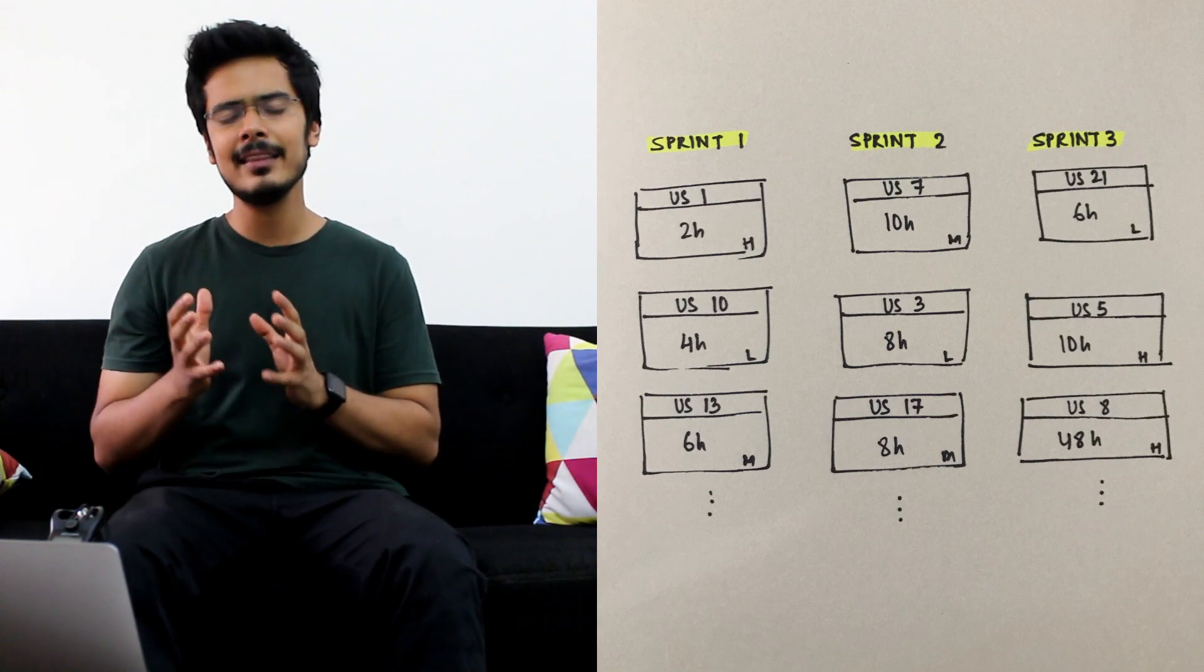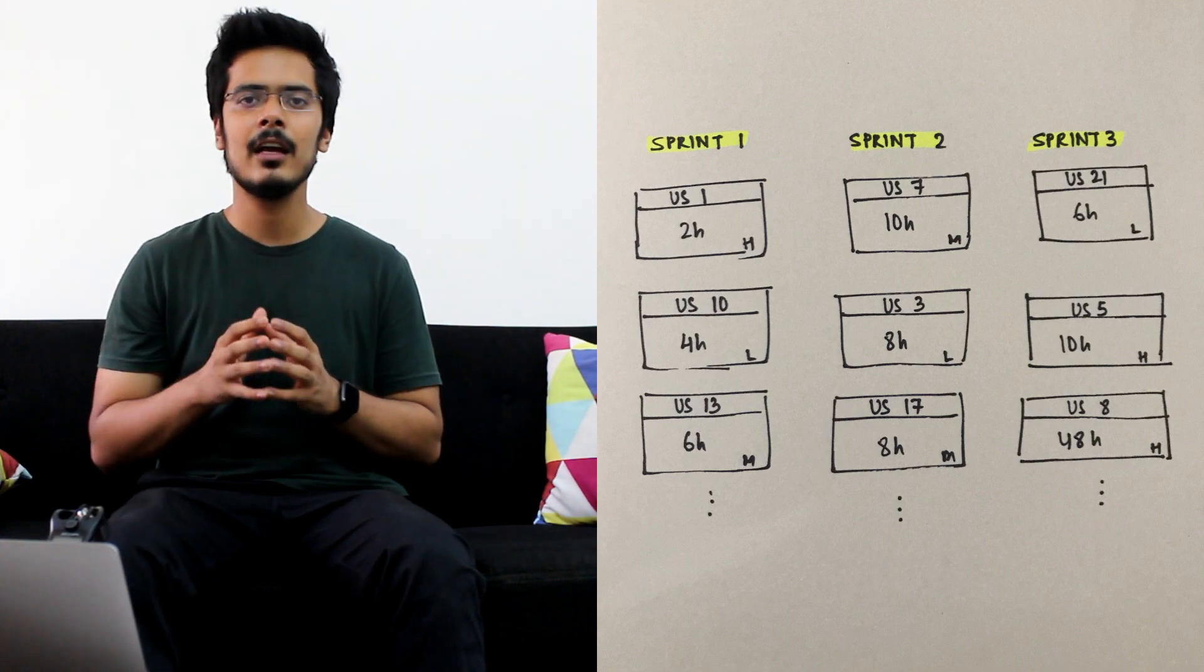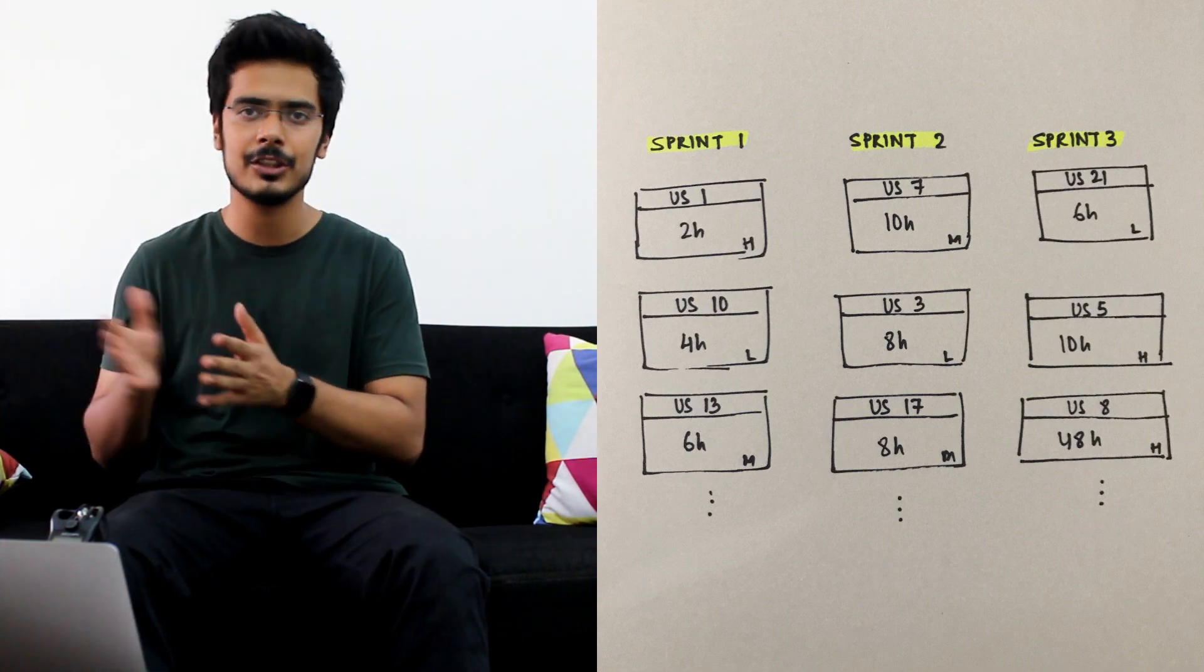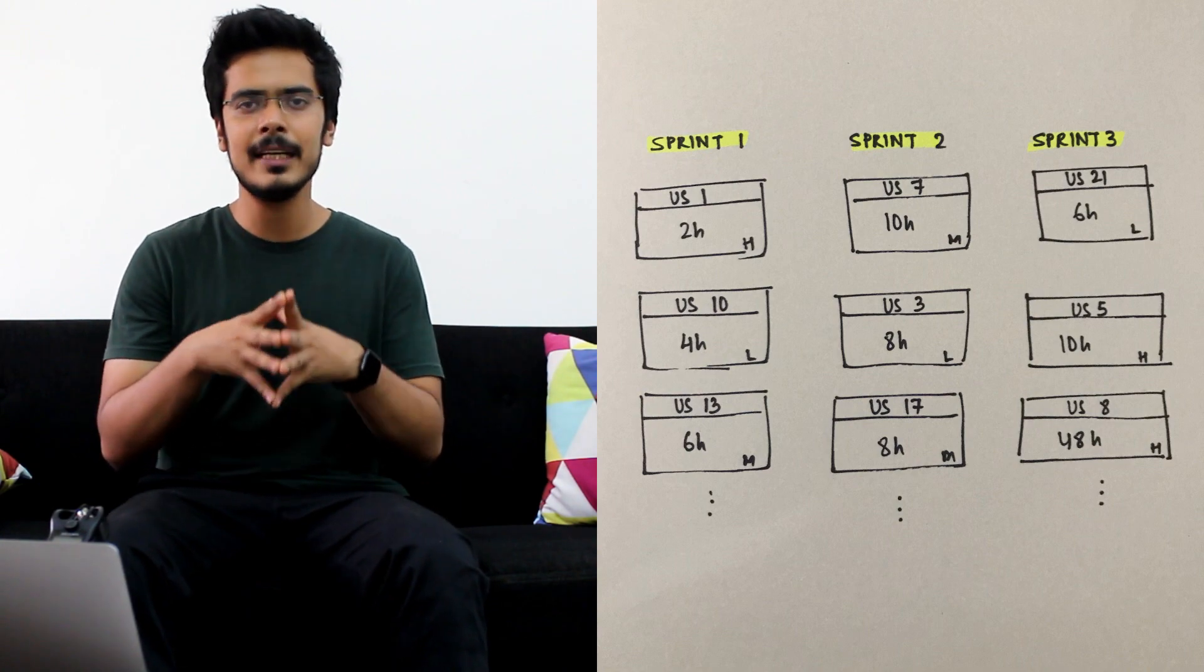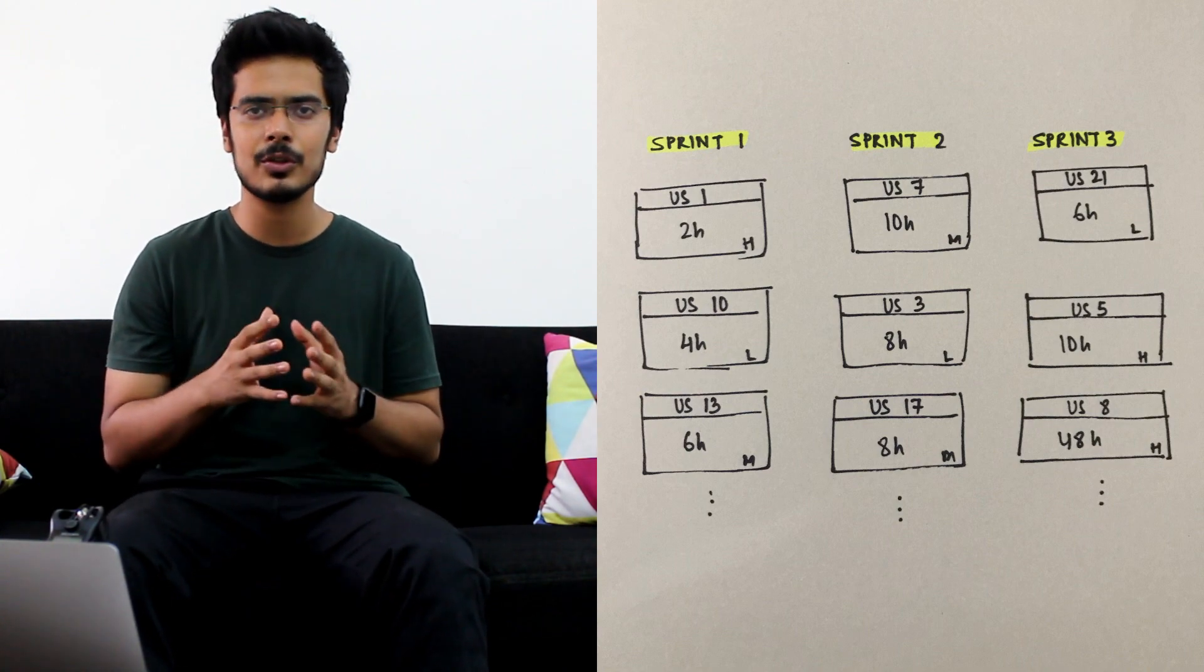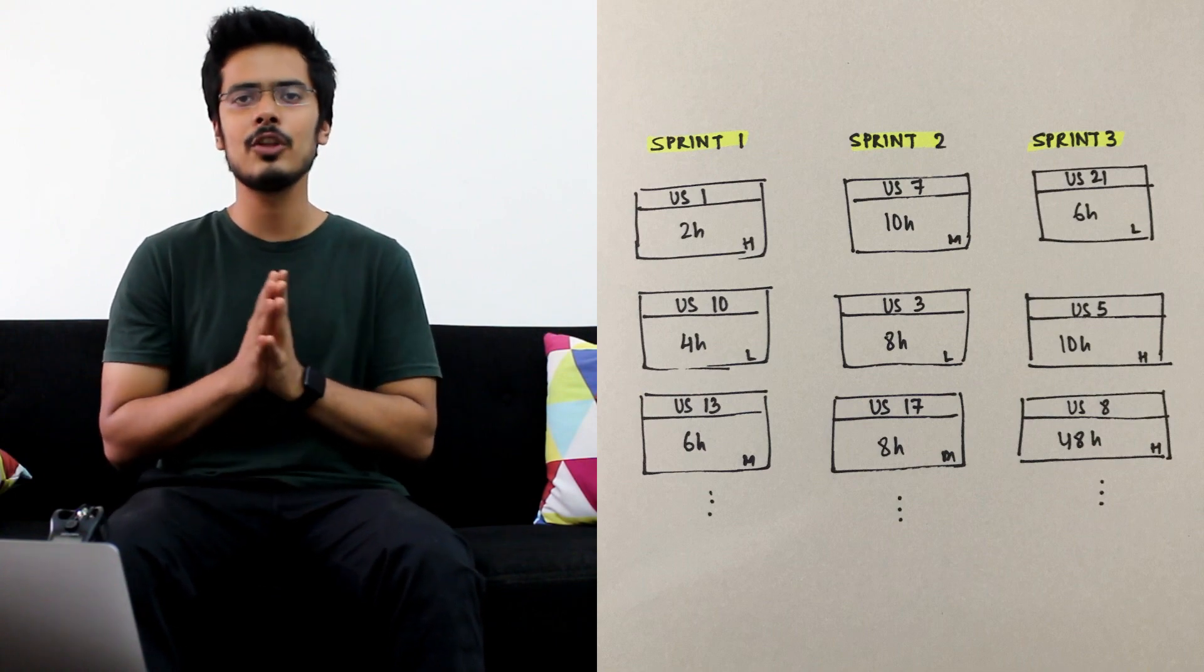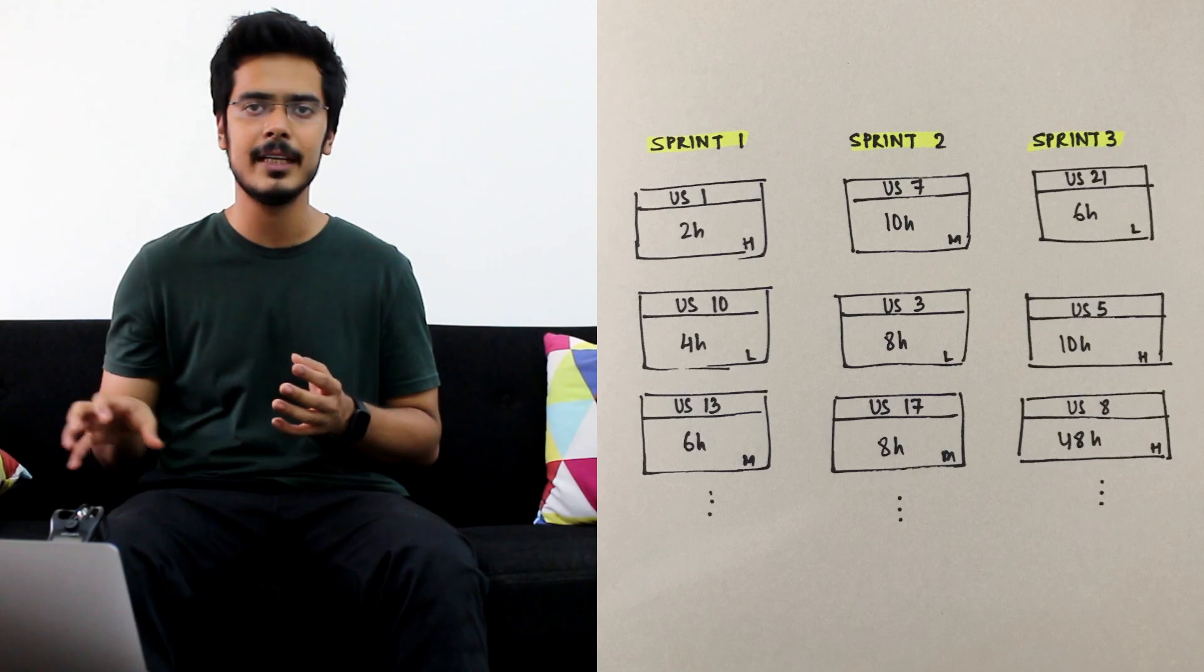Your release cycles define the length of your sprint cycles. So if you have shorter release cycles you will have shorter sprint durations. At the end of the sprint, if your team is not able to complete all the user stories which is a cause for concern, it tells you that your project is not on schedule and something needs to be done.